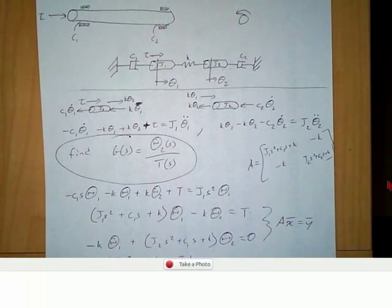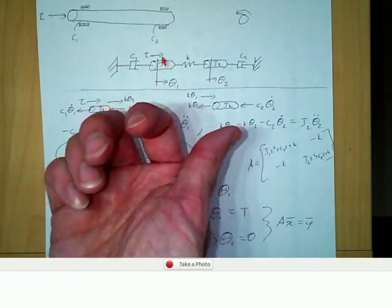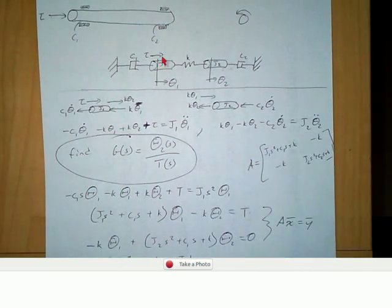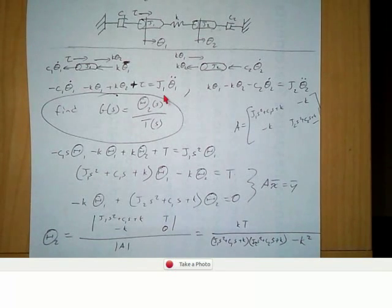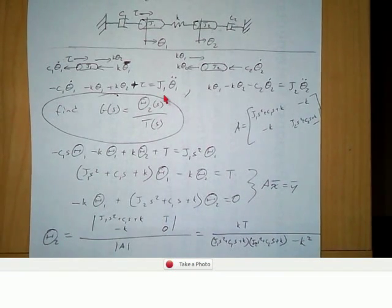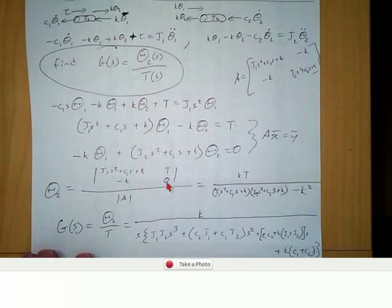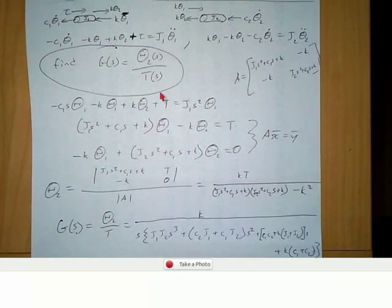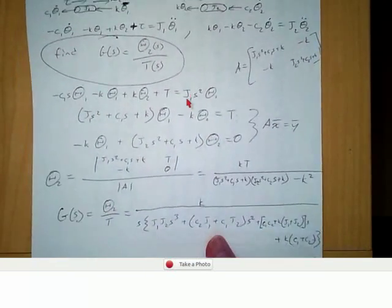There's our transfer function relating the displacement of this end of the rod to the input torque. The process is the same as with translational systems — we assume positive directions, except now these positive directions refer to rotation using the right-hand rule. The free body diagrams have torques, and instead of mass, the mechanical impedance for rotation is the moment of inertia J. We end up with the same sort of equations, summing impedances at each motion and solving for the transfer function using Cramer's rule.